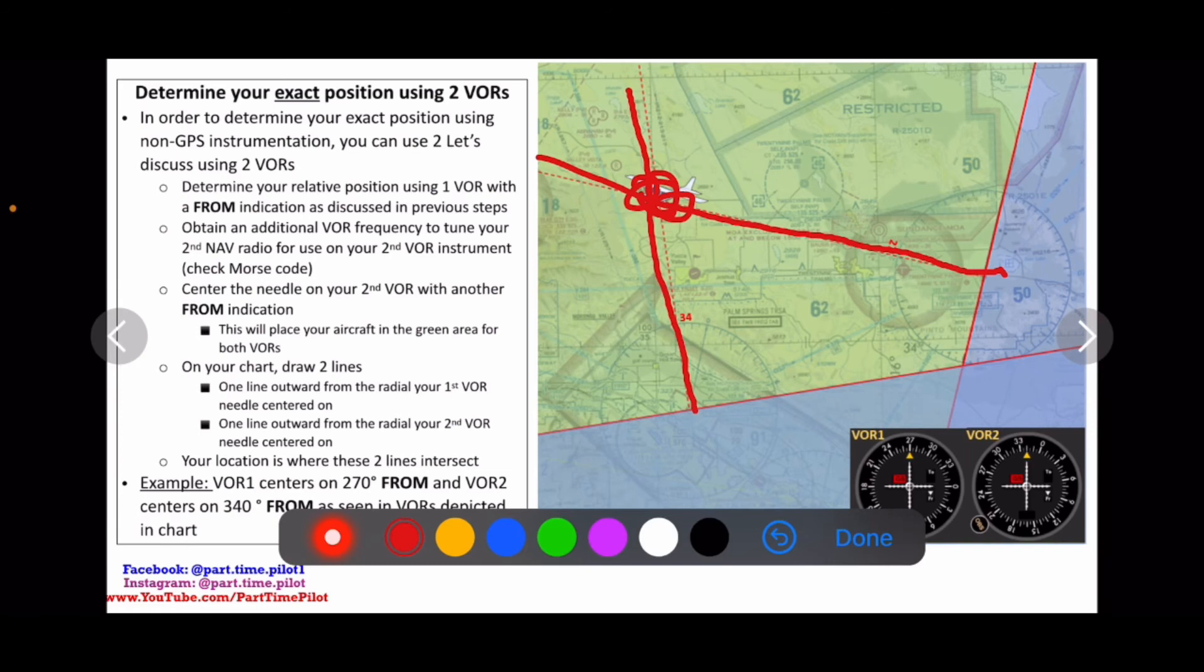So we won't know that we'll just be circling around and we'll be lost. Let's say we lost our position. We don't know where we are on our map. So we're going to circle around. We're going to dial in this VOR until we have it centered with a from. Then we're going to dial in on VOR two centered with a from. We're going to draw lines out from where we centered with froms and where those lines intersected. That's where our aircraft is.